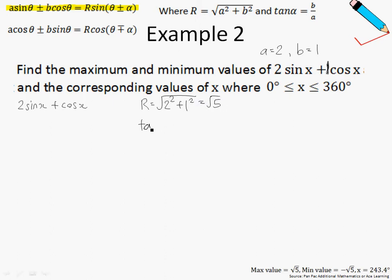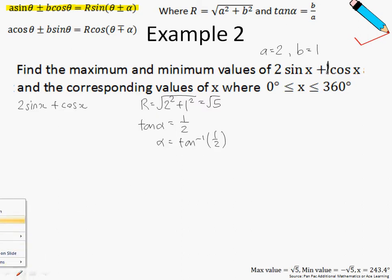Next, the tangent of alpha is given to be b over a, which is one half. And therefore alpha is just tangent inverse of one half, which we can round off to roughly 26.6 degrees.